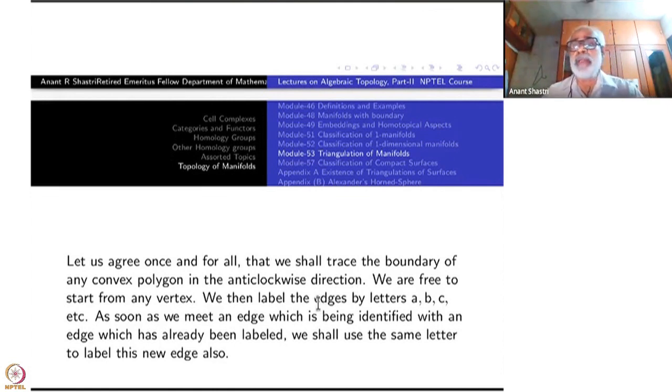So what we are going to do, we then label the edges by letters A, B, C and so on. Edges are labeled now A, B, C. As soon as we meet an edge which is being identified with the edge that we have already labeled, we shall not use another letter. We shall use the same letter. Suppose I have started A, B and the next one is identified with A. Then I won't call it C, I will call it A.